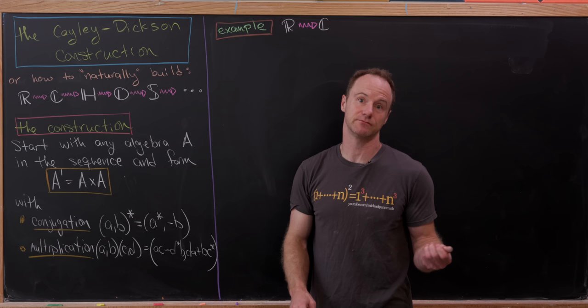Another thing you can check: if you take a + B·capital I + C·capital J + D·capital K and take its conjugate, as an ordered pair this is (a + bi, c + di). Its conjugate is (a minus bi, minus c minus di), which written out with those four symbols gives a times the multiplicative identity minus B·I minus C·J minus D·K — exactly what we should expect for taking the conjugate of a quaternion. Now let's do H to O, that is the quaternions to the octonions.